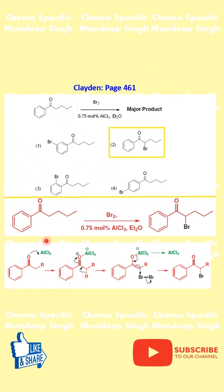Aluminium Chloride is a strong Lewis acid. It coordinates to the carbonyl oxygen, activating the ketone. What this does is shut down electrophilic aromatic substitution.